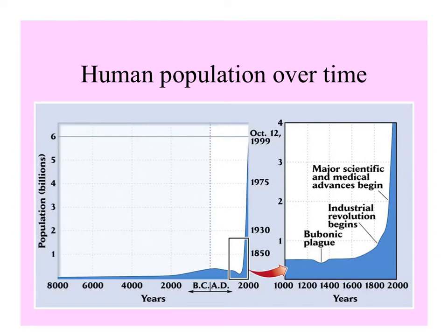But over time, you can see what's happened in the last few thousand years. There has been exponential growth. The population of the Earth now measures in the billions, helped by the Industrial Revolution allowing us to make much more food more efficiently, and major scientific and medical advances as well.